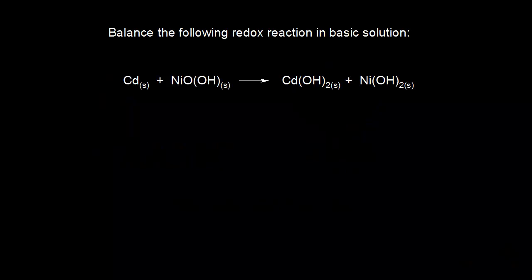We need to balance the redox reaction for a nickel-cadmium battery. Solid cadmium plus nickel oxide hydroxide give us cadmium hydroxide and nickel hydroxide. In the battery, this takes place in basic solution. We've already seen how to balance a redox reaction in basic solution. This video is a review — remember, you pretend like it's an acidic solution and then convert it to a basic solution.